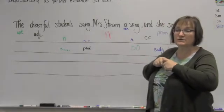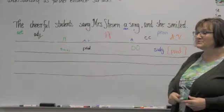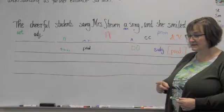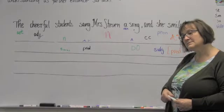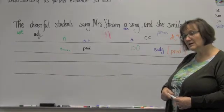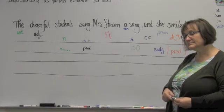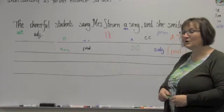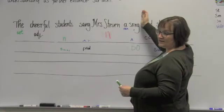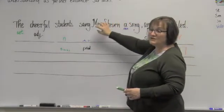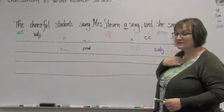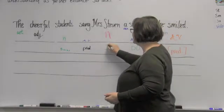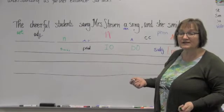Now once we have our direct object, what do we look for next? Indirect object. Indirect object. If we have one, where will we find it in the sentence? I think, I'm saying where I think it is though. Okay. I think it should be like, Miss Steven, because then you could do the cheerful students sang a song to Miss Steven. Oh, very good. We could take this and put it at the end of this clause in a prepositional phrase. Right? It's also saying that I'm the receiver of the song. Yes. Very good. Excellent. You're absolutely right. Mrs. Steven is the indirect object of the sentence.